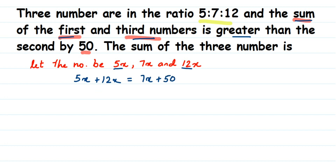Let us read the statement once again: the sum of the first and third number — this whole sum — is greater than the second number, which is 7x, by 50. So if I add the first and third numbers, that sum is more than the second number by 50. If I add 50 to the second number, it will be equal to the sum of the first and third number. That is how we formed the equation.